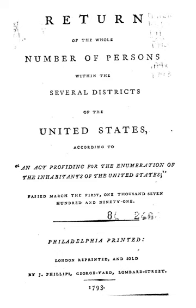Census data included the name of the head of the family and categorized inhabitants as follows: free white males at least 16 years of age, to assess the country's industrial and military potential; free white males under 16 years of age; free white females; all other free persons reported by sex and color; and slaves.